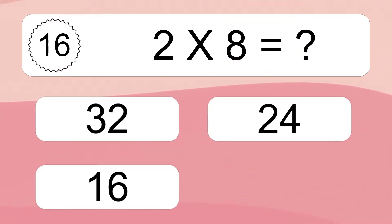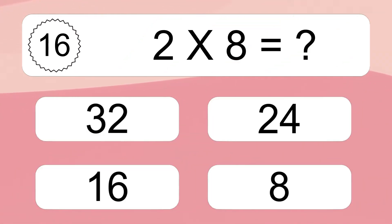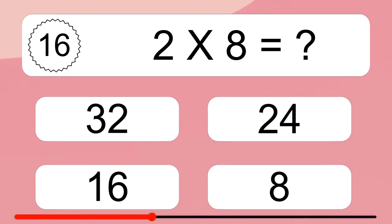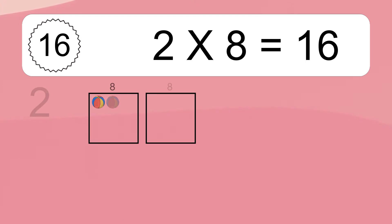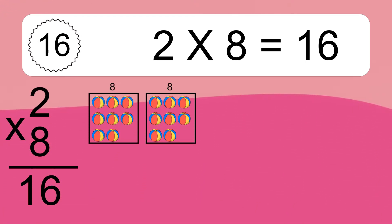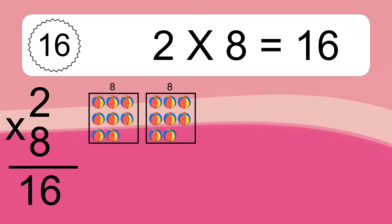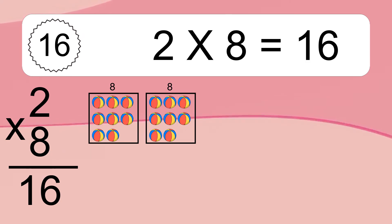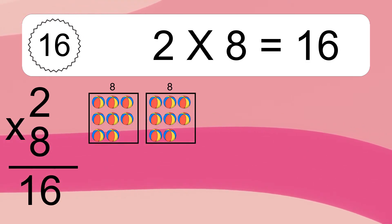2 times 8 equals what? 2 times 8 equals 16. We have 2 boxes, and each box has 8 colorful balls inside. If you count all the balls in all the boxes together, you will have 2 times 8 balls. This equals 16 balls.